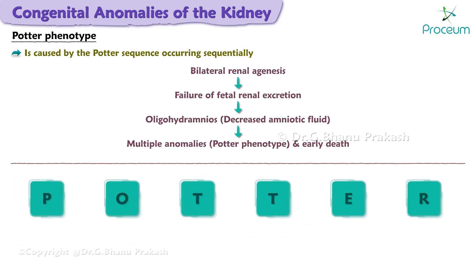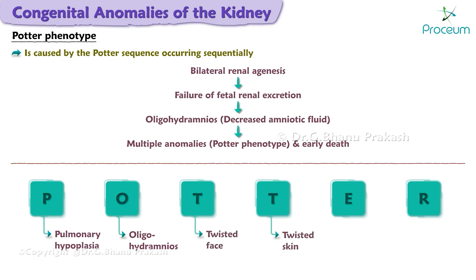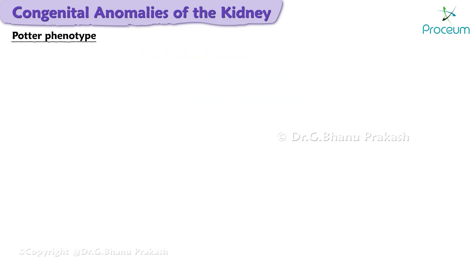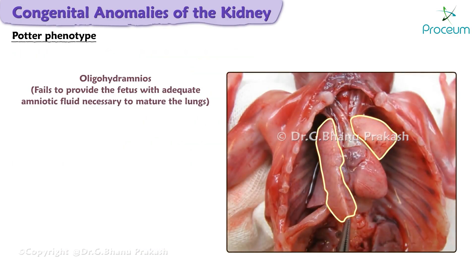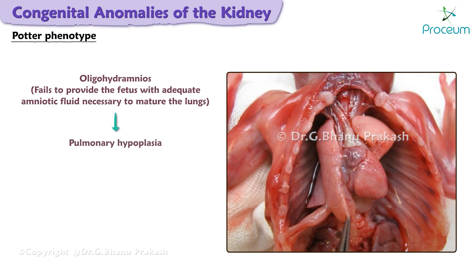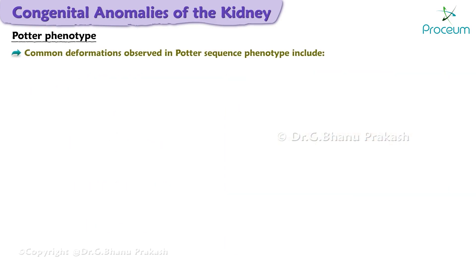The Potter sequence phenotype is associated with the mnemonic POTTER: P for pulmonary hypoplasia, O for oligohydramnios, T for twisted face, T for twisted skin, E for extremity defects, R for renal failure in utero. Oligohydramnios fails to provide the fetus with adequate amniotic fluid necessary to mature the lungs, leading to pulmonary hypoplasia with severe respiratory failure and early neonatal death.